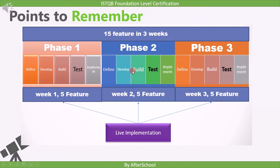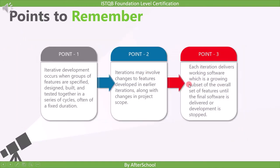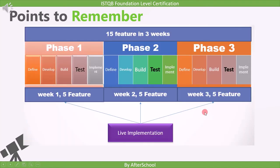Point three — each iteration delivers working software that is a growing subset of the overall set of features until the final software is delivered or development is stopped. For example, with 15 total requirements, the five developed in phase one are a subset of the full feature set. This process continues until all 15 requirements are delivered in working stage.